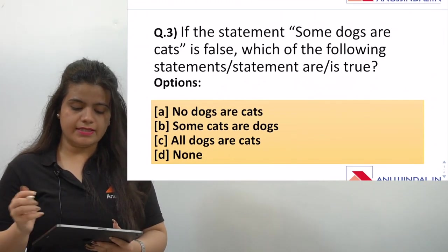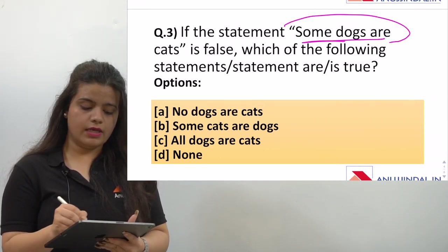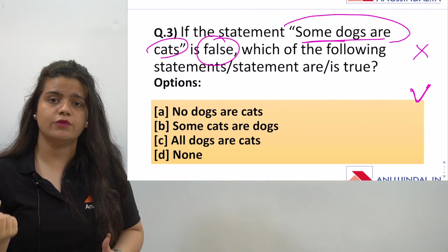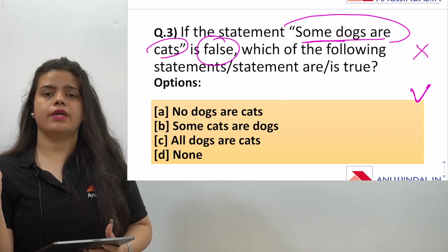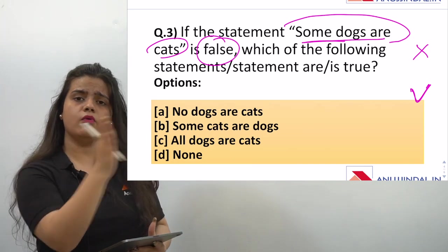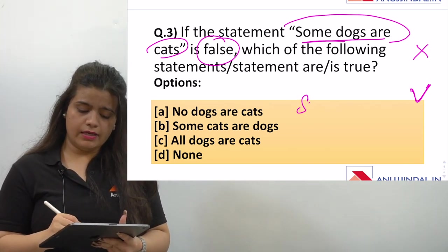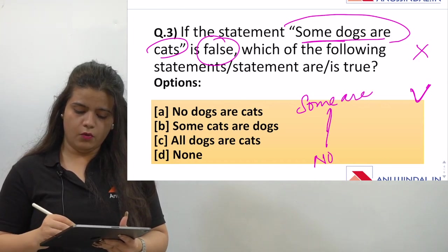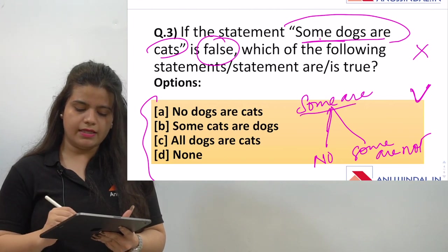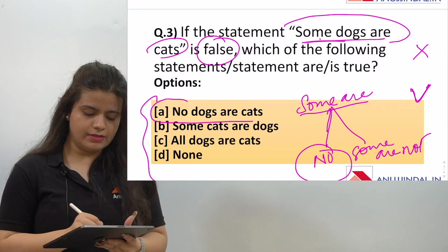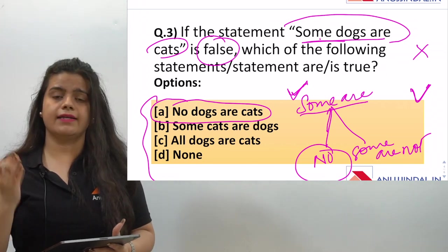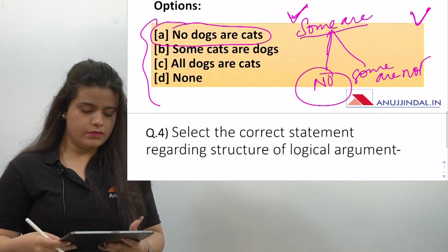The third question is: if the statement 'Some dogs are cats' is false, which statement will be correct? In our logic videos, we explained that the law of oppositions works in two ways — universal laws like contradictory, subcontrary, and subaltern. The opposite of 'Some' is 'No.' So if 'Some dogs are cats' is false, then 'No dogs are cats' must be correct.